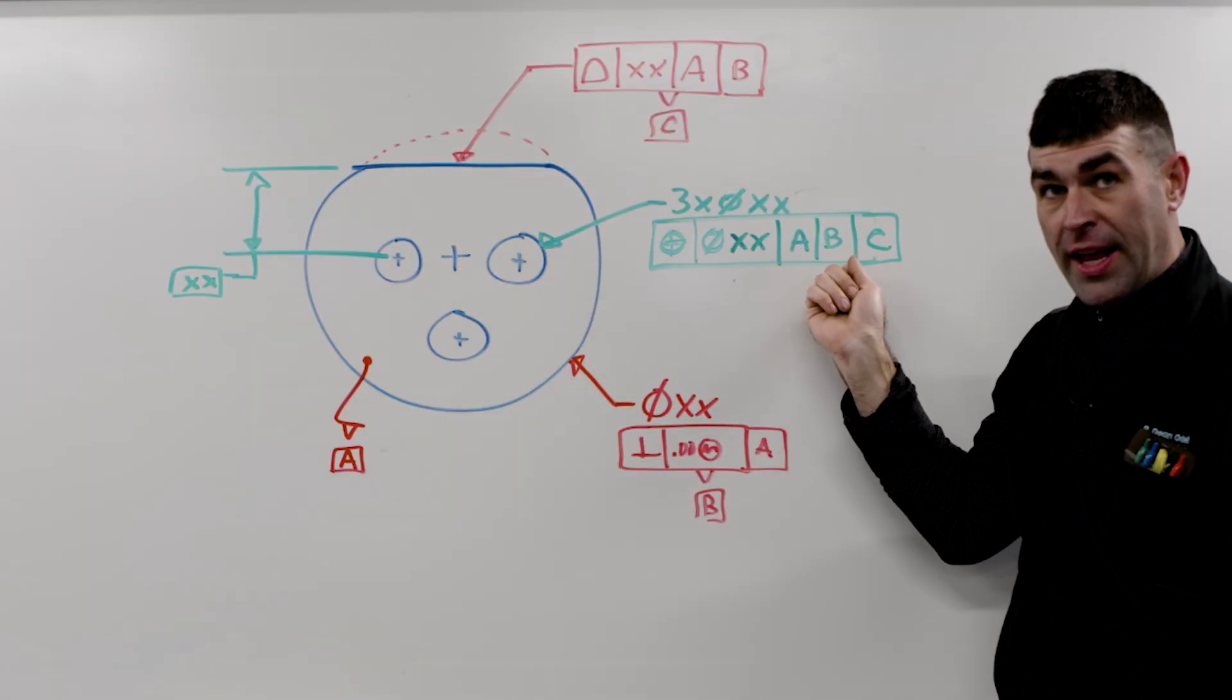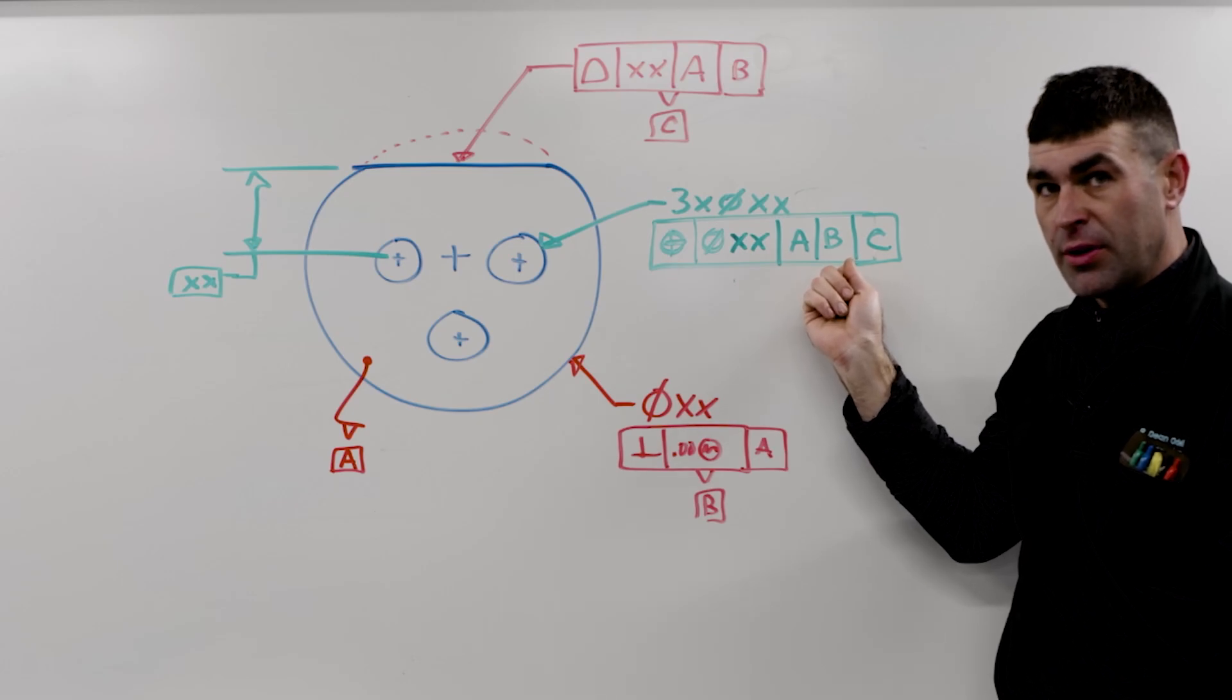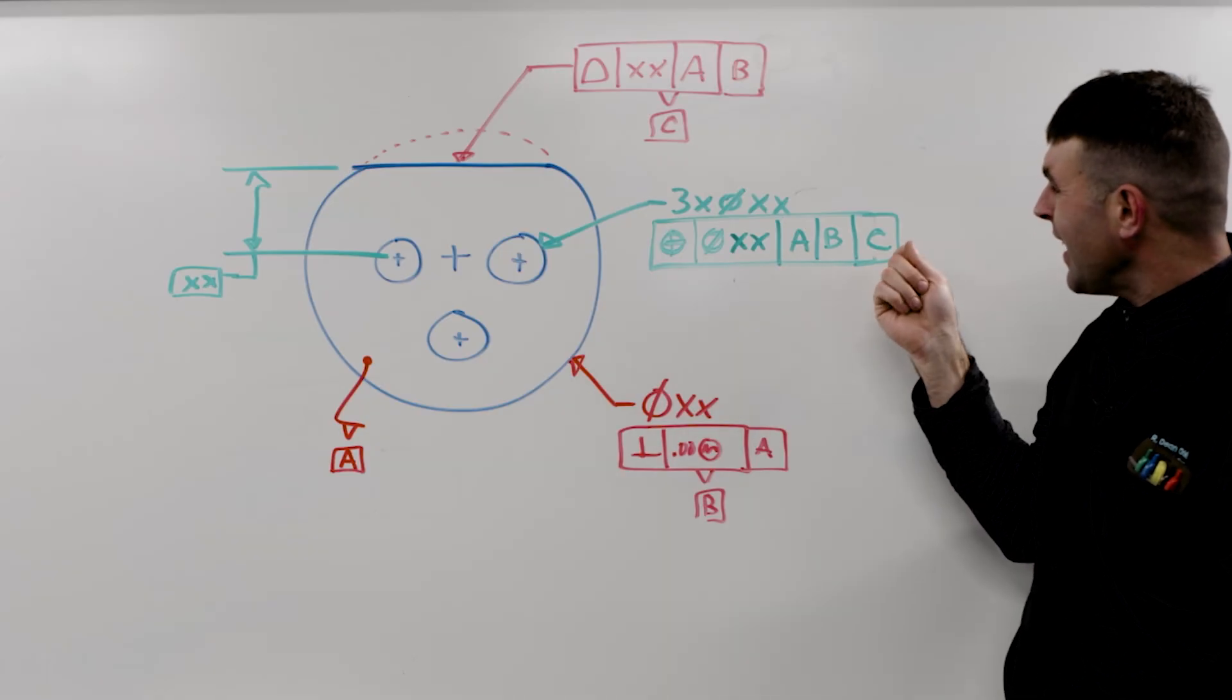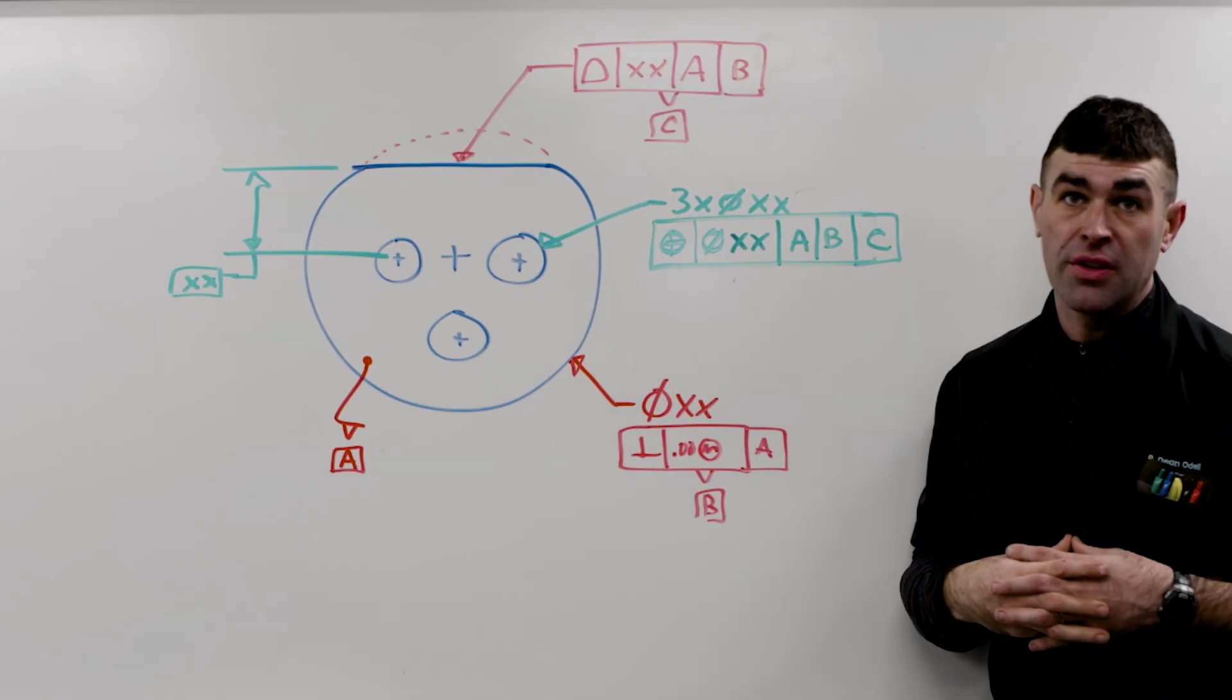So this can be blank, which is RMB, that collapsing cylinder, or MMB or LMB. Now, C is the purpose of this video.